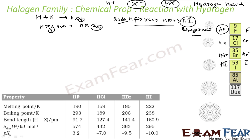Hydrogen reacts with halogen to form HX (hydrogen halide). When hydrogen halide reacts with water it forms hydrohalic acid — same as HX but in aqueous medium. Hydrogen fluoride is maximally stable and has a very high boiling point due to strong hydrogen bonding, where F carries a slight negative charge and H carries a slight positive charge.